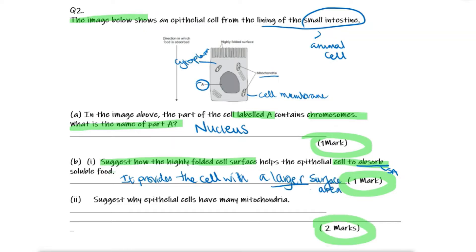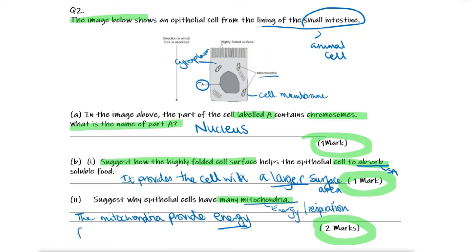Worth two marks: why do epithelial cells have many mitochondria? The two key points about mitochondria we always remember are energy and respiration. So the answer here would be: the mitochondria provide energy for respiration — and these two keywords give us the two marks.